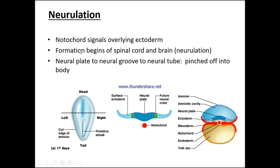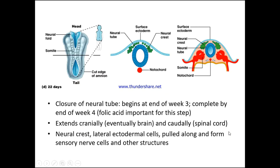Neurulation: the notochord signals the overlying ectoderm, beginning the formation of the spinal cord and brain. This is known as neurulation — the neural plate to neural groove to neural tube is pinched off in the body. Looking at this cross-section, we have the surface ectoderm, the neural plate, the future neural crest, the region of the notochord, the amniotic cavity, the ectoderm and mesoderm in the middle, the notochord and endoderm posteriorly, and the yolk sac — all of which will eventually fuse in.